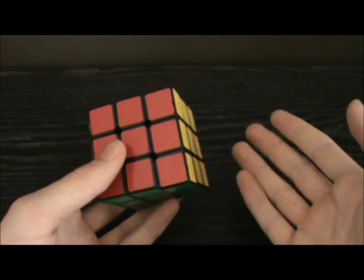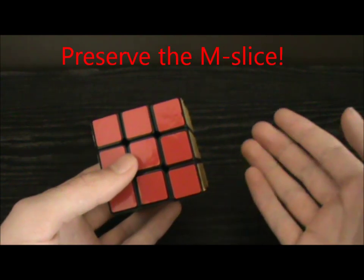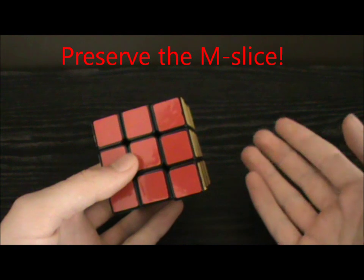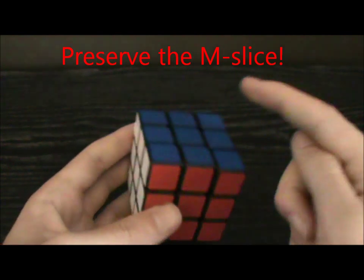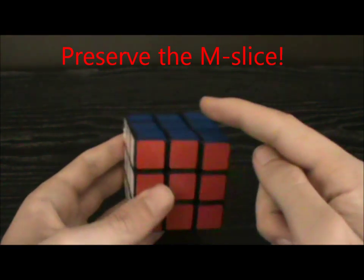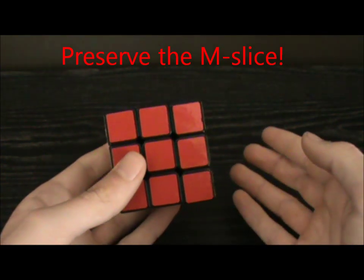But this will only work if the M slice is preserved after the setup move. So after the setup move, UB is the only piece in the M slice that is allowed to change.